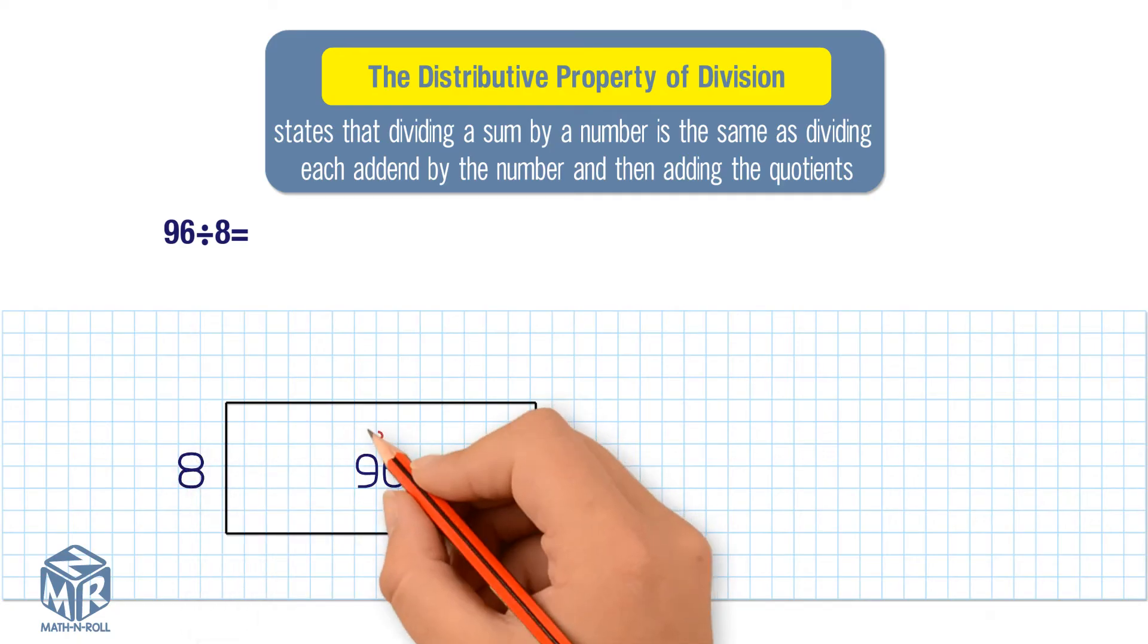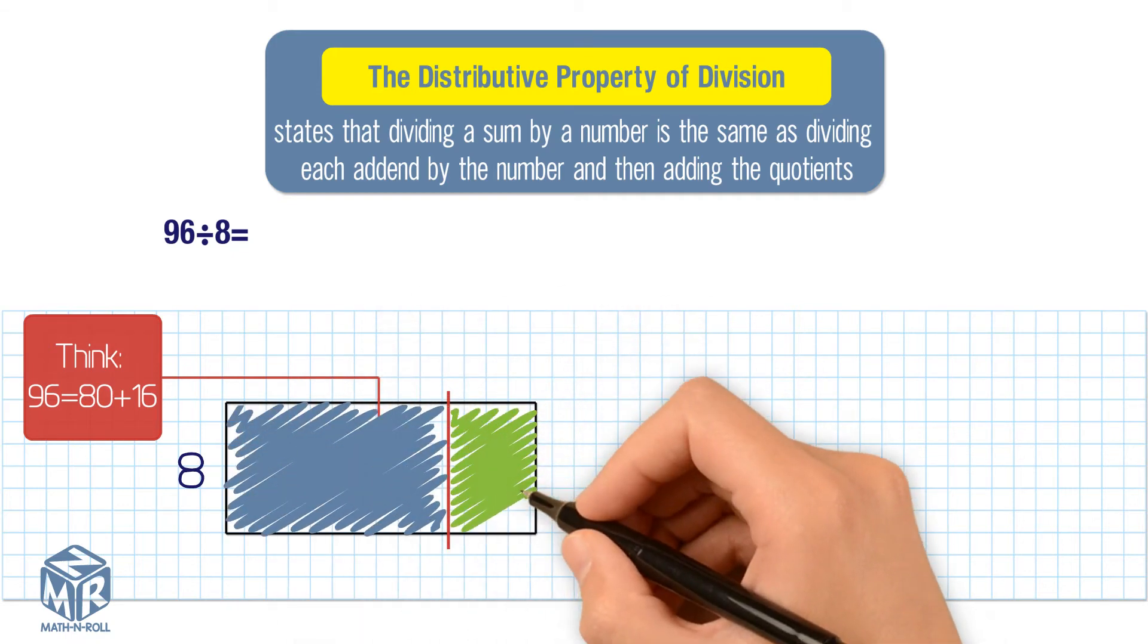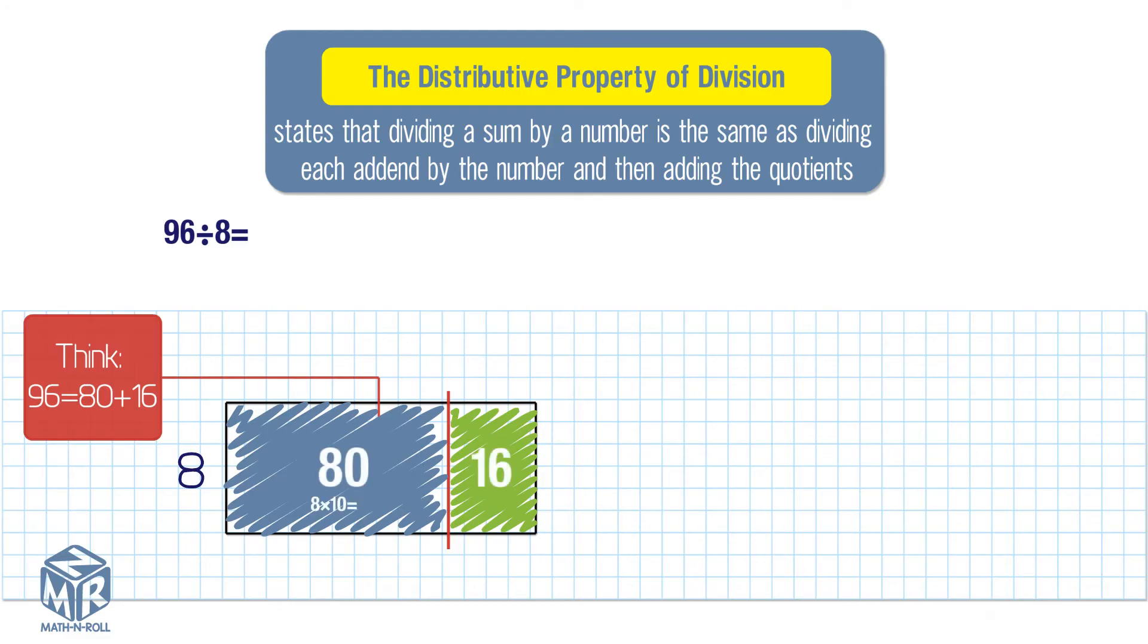We break apart 96 into 80 plus 16. We do this because 80 and 16 are easy to divide by 8. Break apart the model into two rectangles to show the sum of 80 and 16 divided by 8.